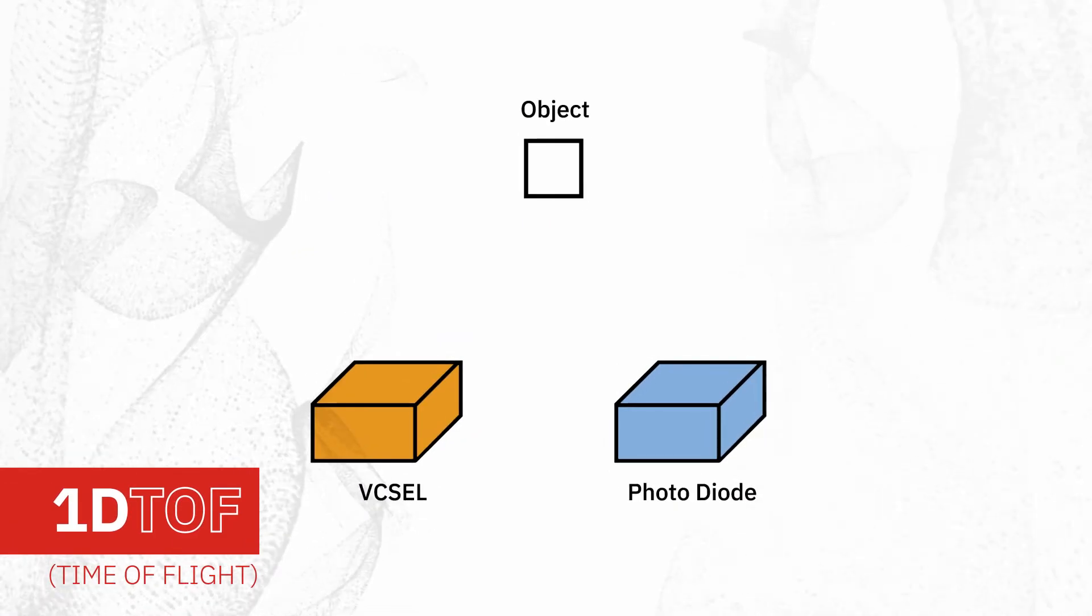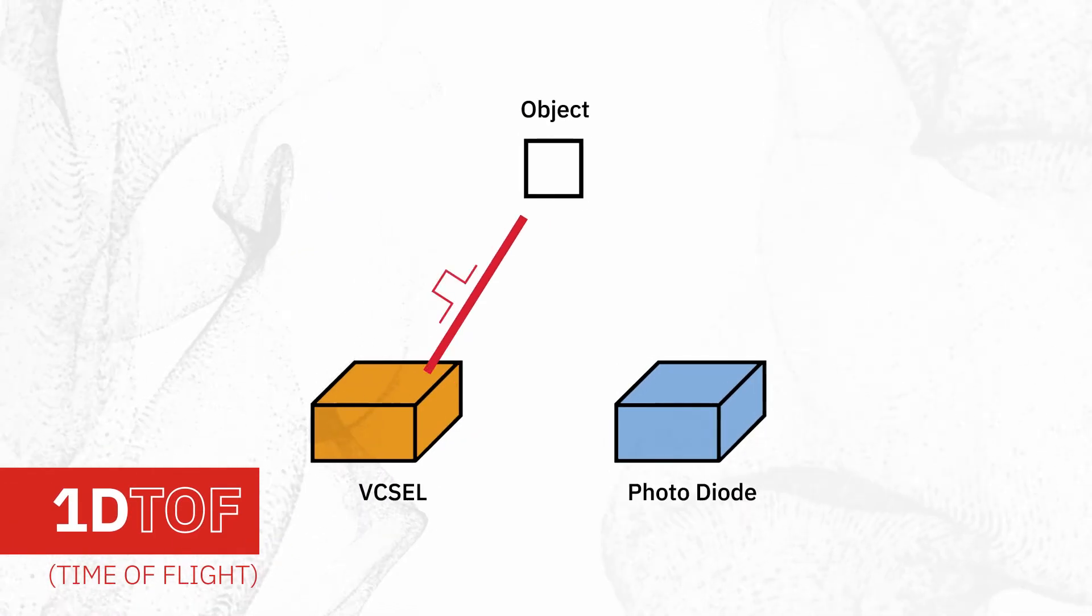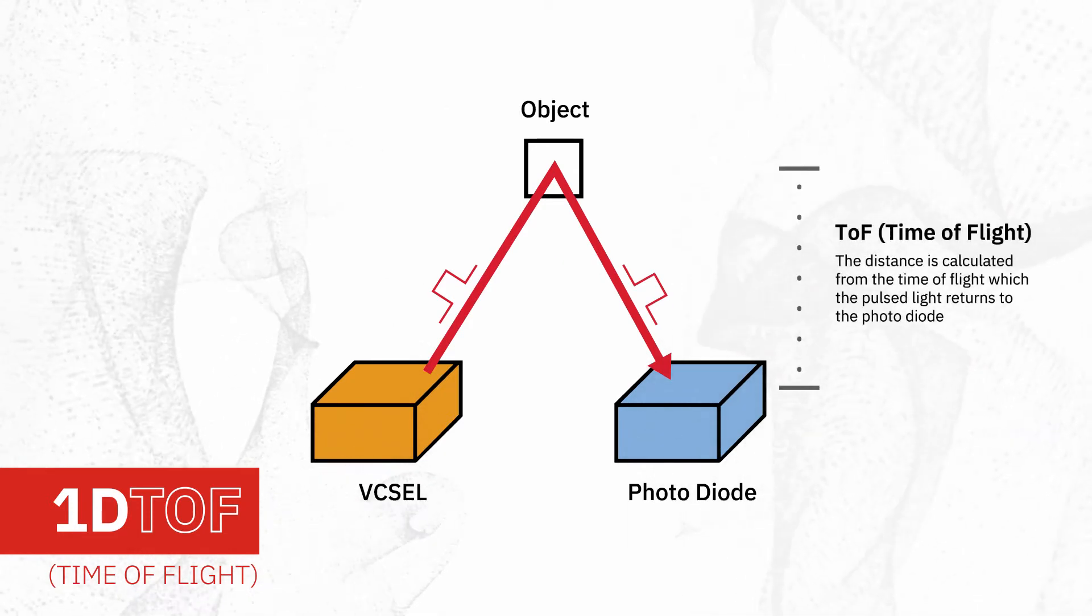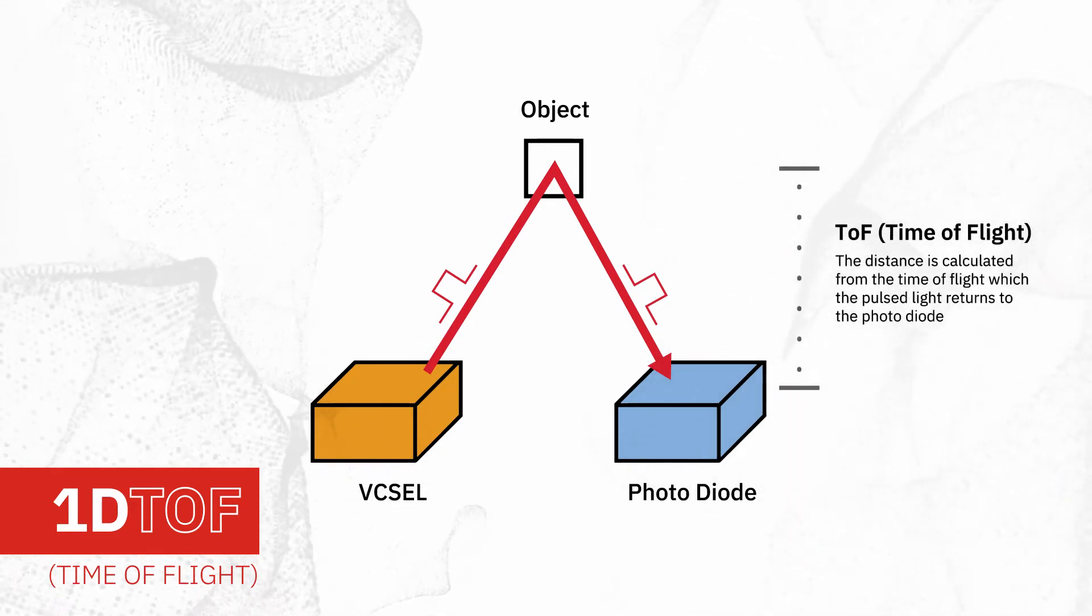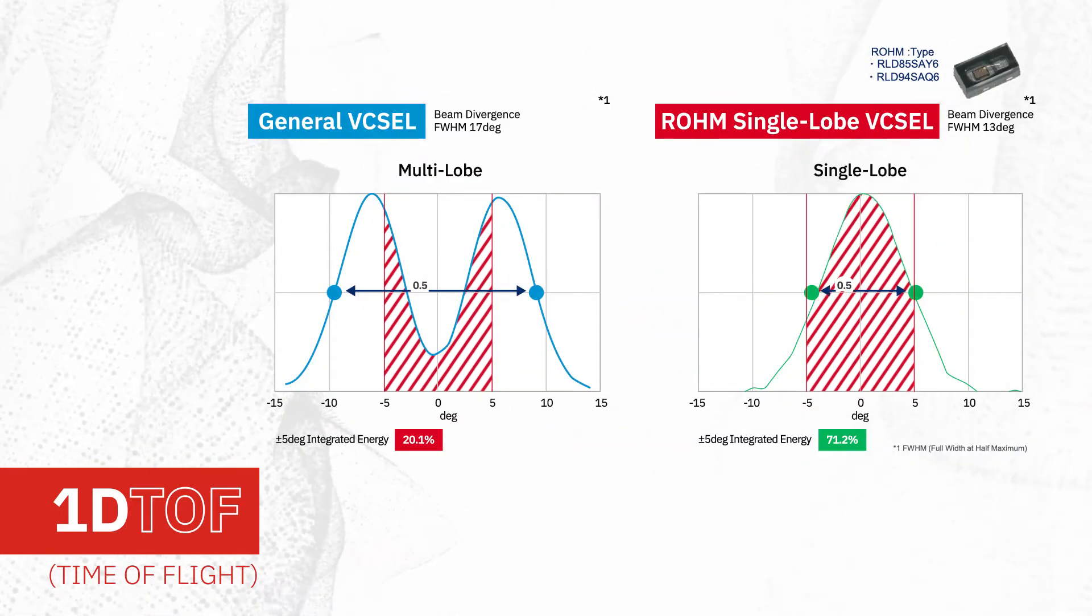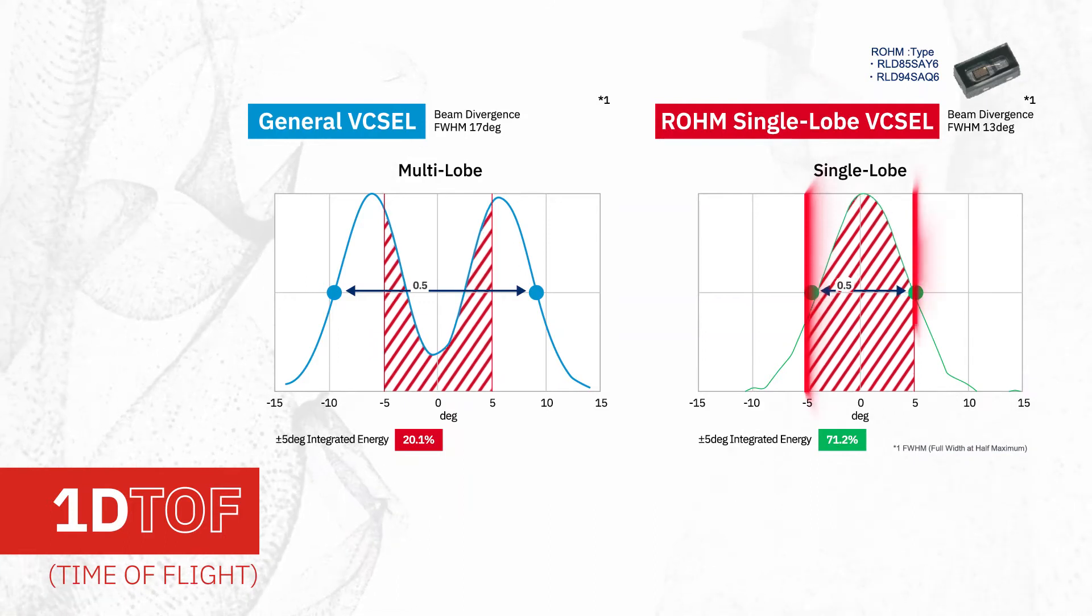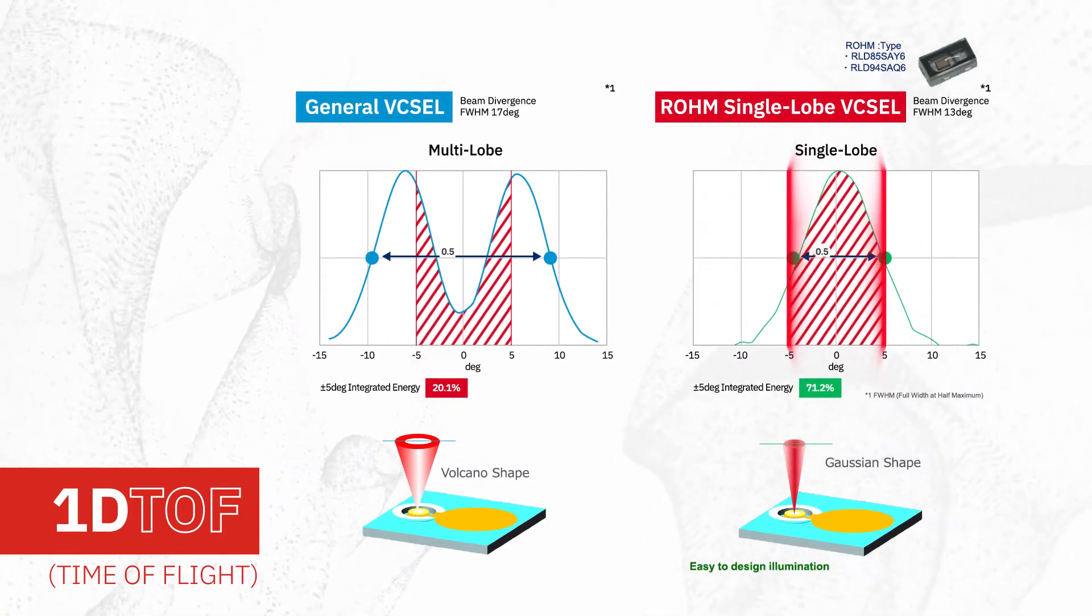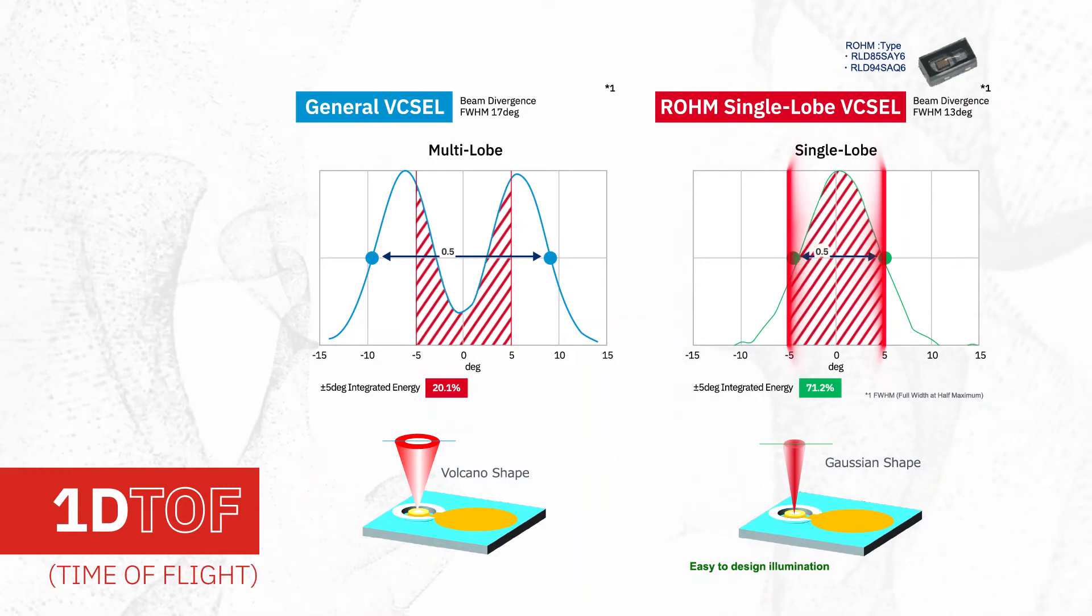In 1D time-of-flight systems, the VCSEL provides a light pulse that reflects off the target and is received by a photodiode, with the time it takes to receive the pulse used to calculate the distance to the object. Our 200mW VCSELs are ideal for these applications, as they have a narrow, single-lobe beam that provides excellent coupling to the emitter lens to enable accurate distance measurement, object detection, or gesture recognition.